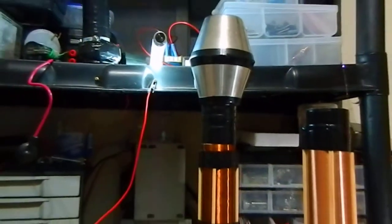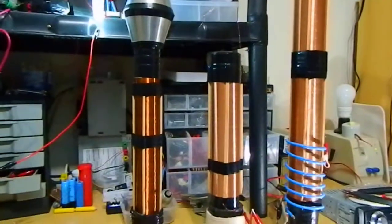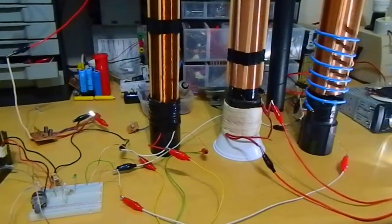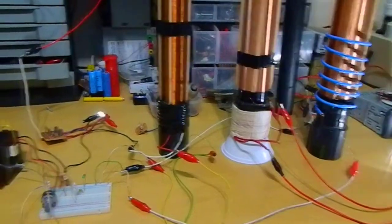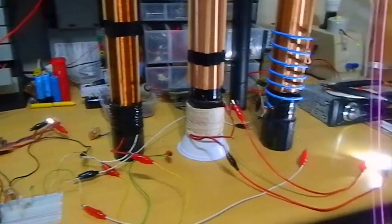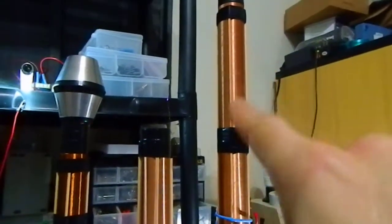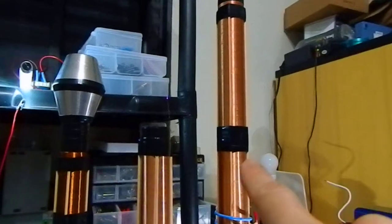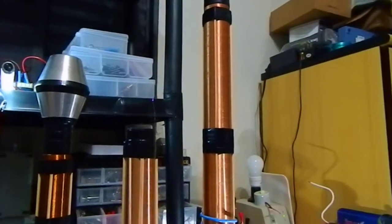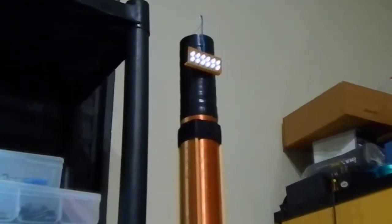So this is the circuit without the earth ground connection going into the Slayer Exciter. On the big coil, this one is connected to the negative rail. On the top of it I have an AV plug with a few LEDs in series.